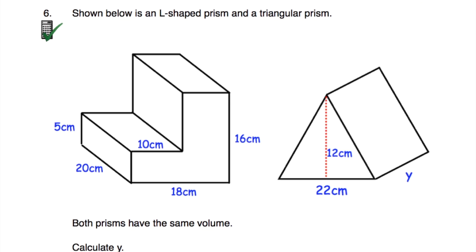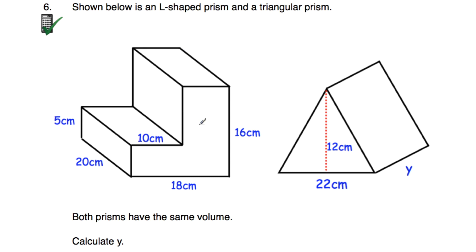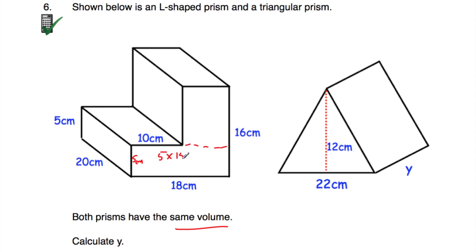Okay, let's have a look at our last question, question number 6. Shown below is an L-shaped prism and a triangular prism. Both prisms have the same volume, and we've been asked to calculate y, which is the length of the triangular prism. So let's find the volume of the L-shaped prism — that will equal the volume of the triangular prism. Then we can divide by the area of the triangular cross-section to find the length. For the L-shaped prism, this part is 5 centimetres, so 5 times 18 is equal to 90 centimetres squared.